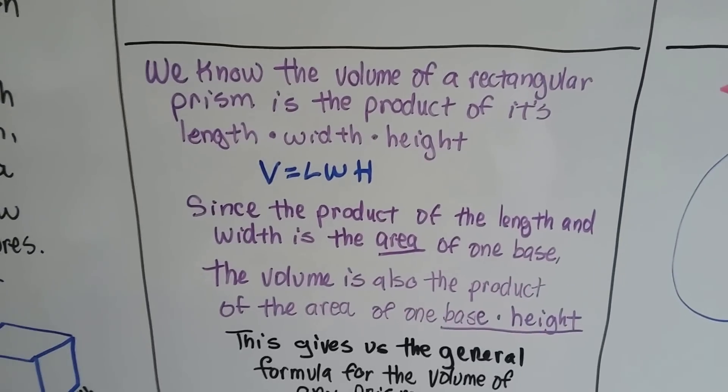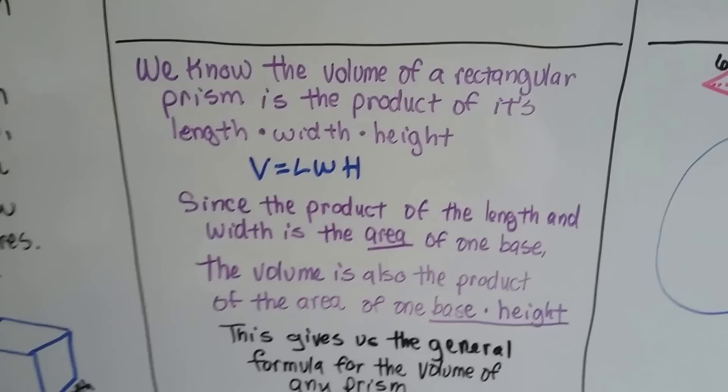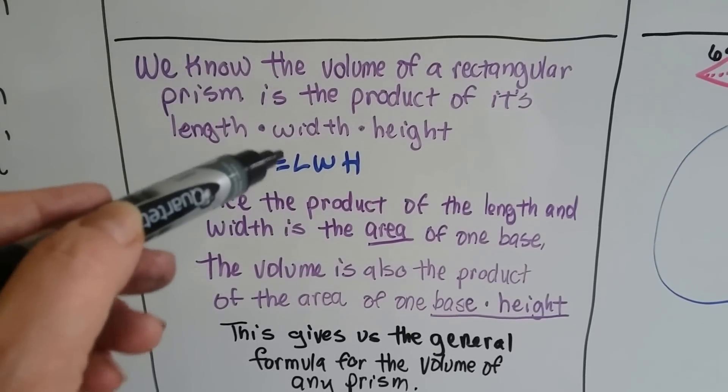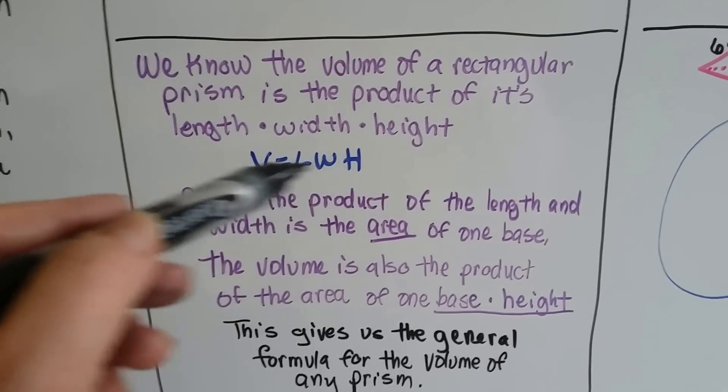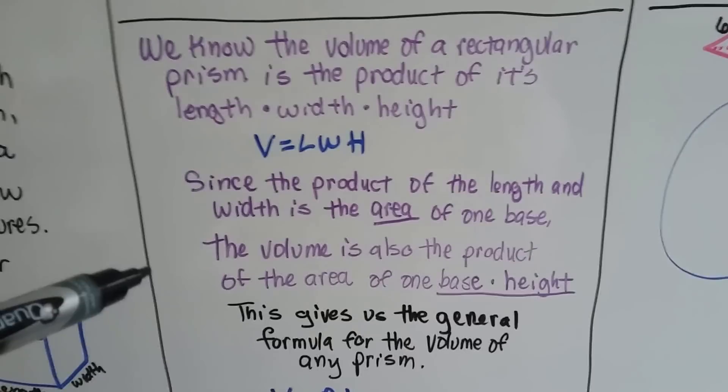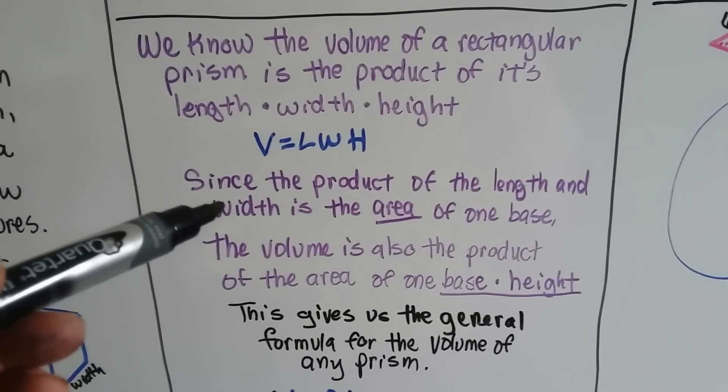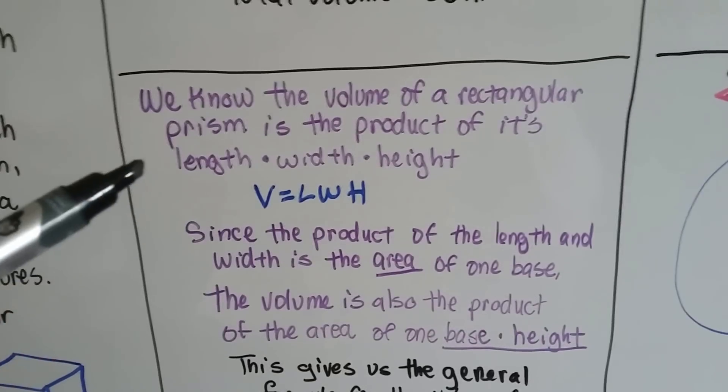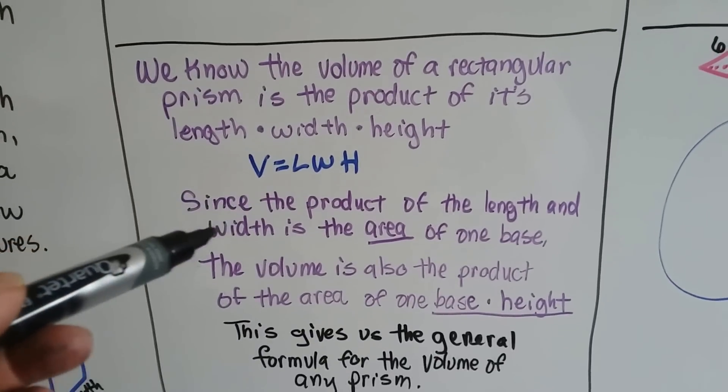We know the volume of a rectangular prism is the product of its length, width, and height: V = L·W·H. Since the product of the length and width is the area of a rectangle, the volume is also the product of the area of one base times the height.